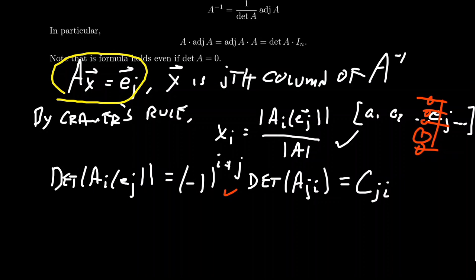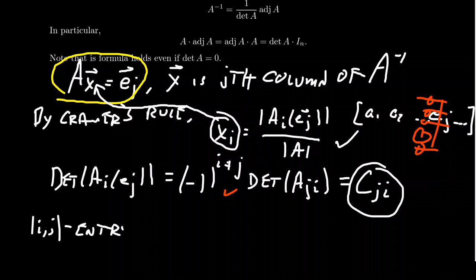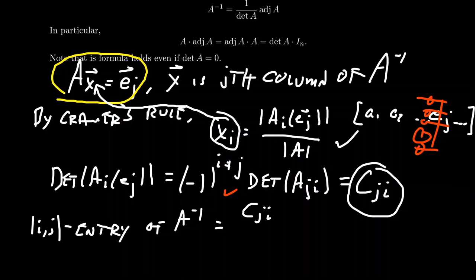And so because of that, we then get that x_i right here is equal to C_ji over det A. And as this was the i-th entry in the j-th column right here, when you put this all back together, we see that the (i,j) entry of A inverse is going to equal C_ji over the determinant of A. And so that verified the formula we had before.